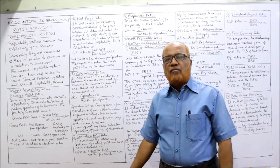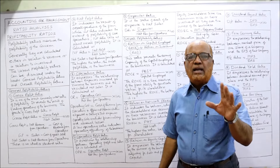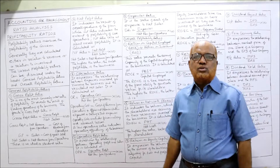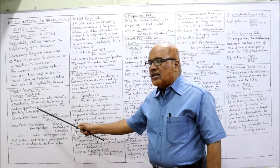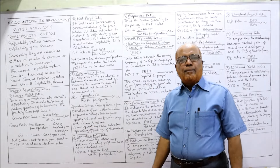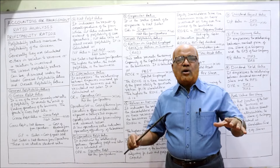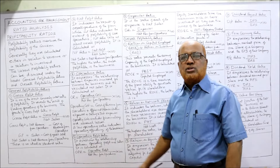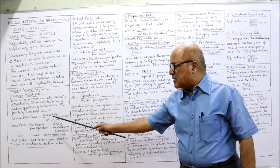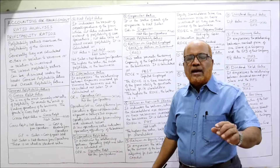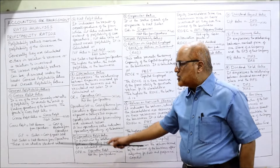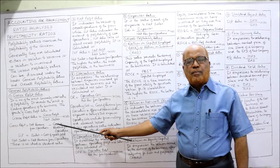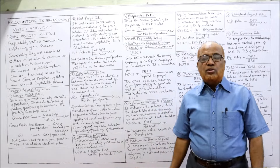The first and most widely used general profitability ratio is the gross profit ratio. This ratio reveals the result of trading operations of the business — buying and selling. The formula is: gross profit divided by net sales into 100. According to new terminology, instead of net sales, we say revenue from operations. So: gross profit divided by revenue from operations into 100.